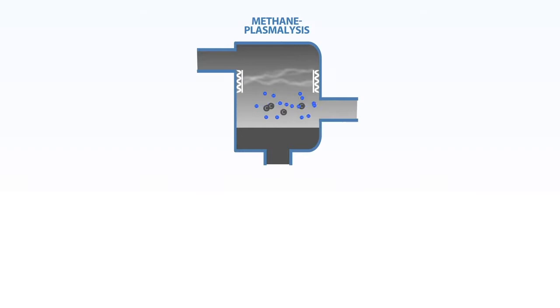Methane plasmolysis enables emission-free energy generation. For example, 1 kg of hydrogen and 3 kg of carbon are generated from 4 kg of methane.